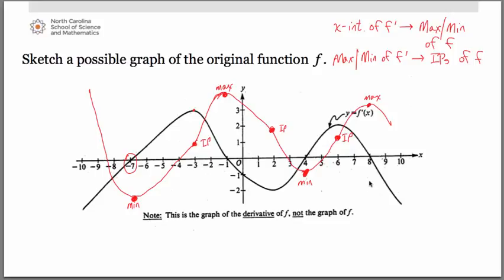This type of problem still shows up very often on the AP exam. When grading, we look for the shape, correct x-values for your max and min points, and correct inflection points on the original graph. This is why I encourage you to put those points in place first — they serve as a guide. The shape doesn't have to be perfect, but it must convey the correct characteristics of the original function f. That's the important part.